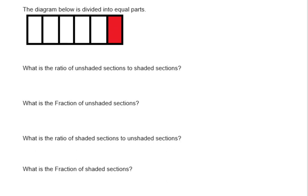When understanding ratio notation, you have to pay close attention to the order of what they're asking. When they ask you to write a ratio, there are two types: part-to-part and part-to-whole. One word that always represents part-to-whole is when we use the word fraction.